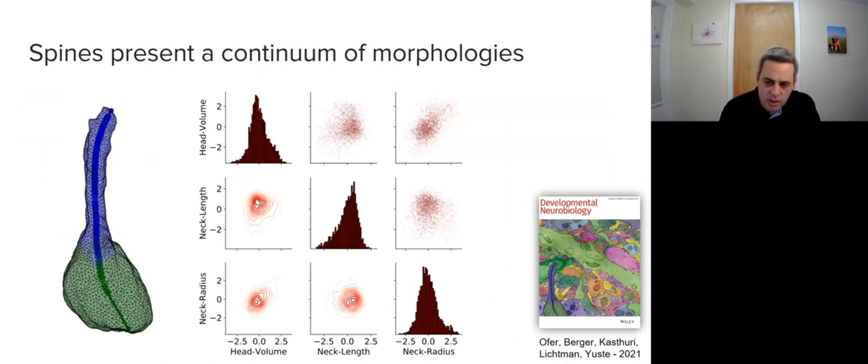Next, we showed that the morphological parameters of head volume, neck length, and neck diameter present a continuous distribution without separation into distinct groups of spines, such as mushroom, thin, and stubby spines.